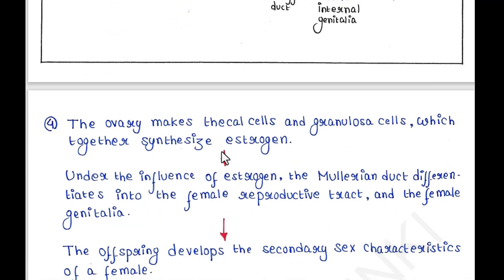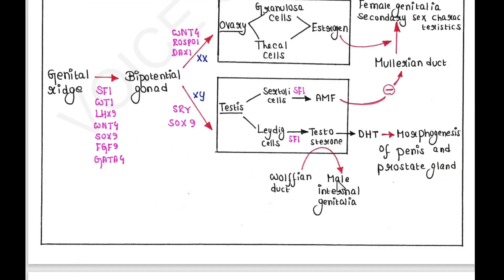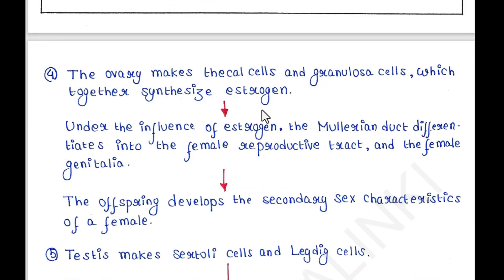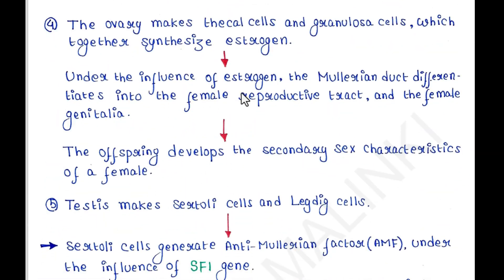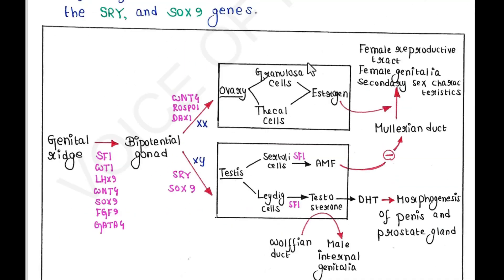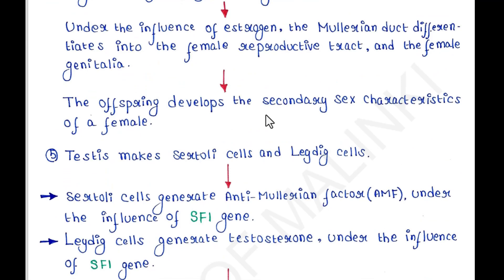The ovary makes thecal cells and granulosa cells, which together synthesize estrogen. Under the influence of estrogen, the Müllerian duct differentiates into the female reproductive tract and the female genitalia. The offspring develops the secondary sex characteristics of a female.